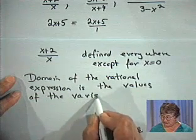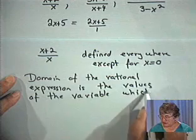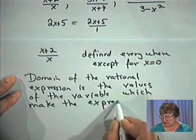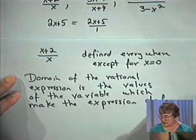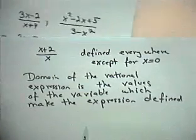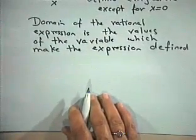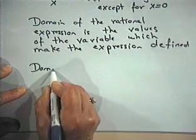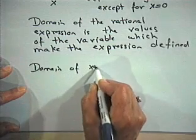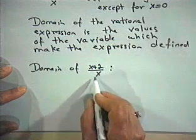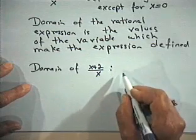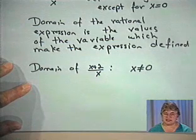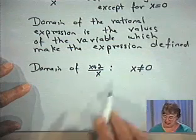The domain of the rational expression is the values of the variable which make the expression defined. One approach to finding domains is to throw out the values for which the expression is not defined. So the domain of x plus 2 over x is all numbers except those that give 0 in the denominator — we throw out x equals 0 and keep everything else.